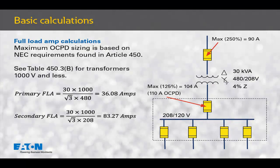The first step is to calculate the primary and secondary full-load amps of the transformer and use that information to determine the maximum fuse size for the primary and secondary mains. This will be based upon National Electrical Code requirements. The primary full-load amps is calculated as 36.08 amps at 480 volts. The secondary full-load amps is calculated as 83.27 amps at 208 volts. We use Table 450.3b from the National Electrical Code to determine the maximum size fuses for primary and secondary mains.